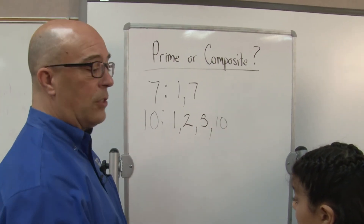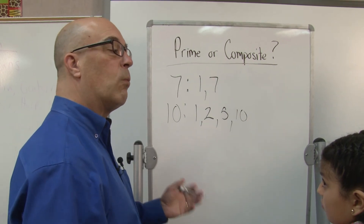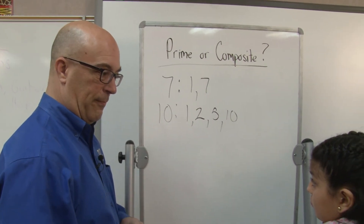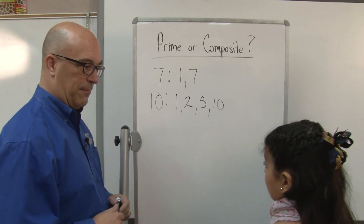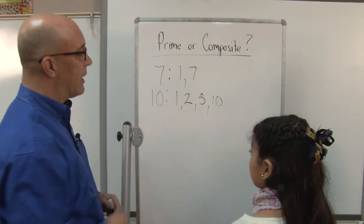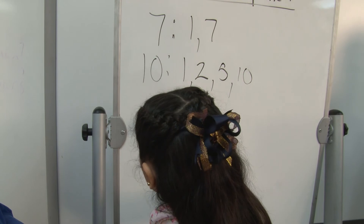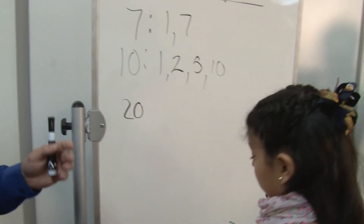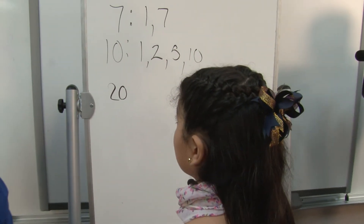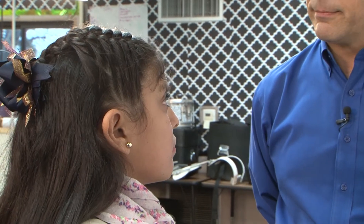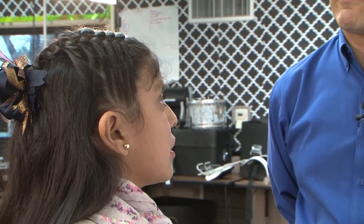So what I'd like you to do is select a number between 1 and 100. 20. 20? Alright, go ahead and write 20 on the board. Now, do you think that is prime or composite? Composite. Why? Because more numbers can go into it. More than just one. So why don't you go ahead and write down the factors — the numbers that go into 20 for me.